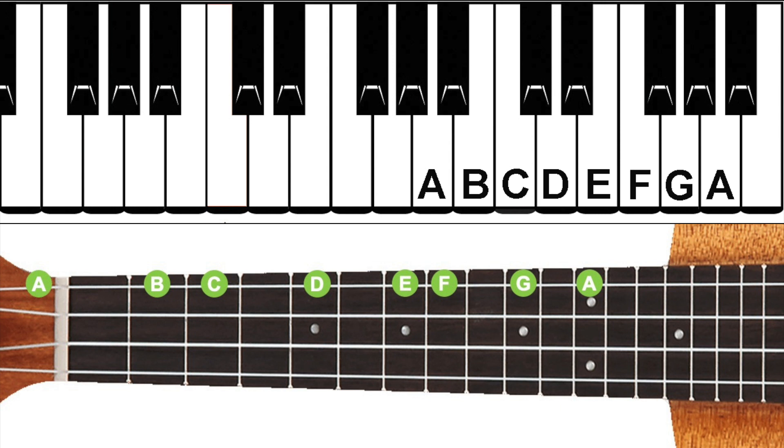These black keys, or extra frets that we didn't play on the A string of our ukulele, can have two different names. They can either be referred to as a sharp or a flat of the notes either side of them, and what we choose to call them is dependent on several things, including the key that we're playing in.